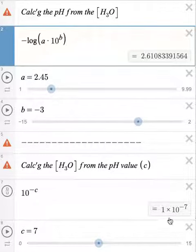In the bottom half of the Desmos pH Scale Calculator, you can calculate the hydronium ion concentration from a known value of pH. For instance, let's just say we have a pH of 10.2 and we want to calculate the hydronium ion concentration.